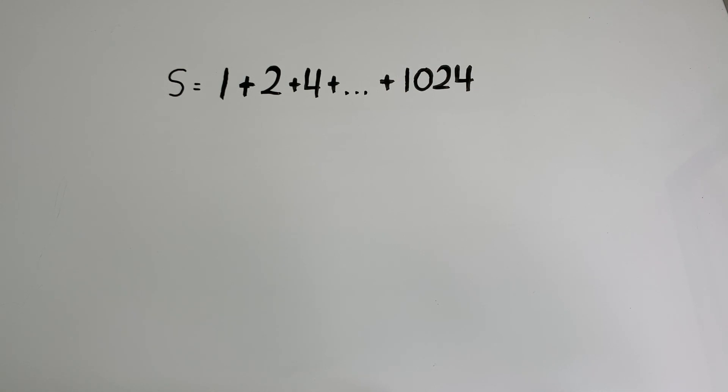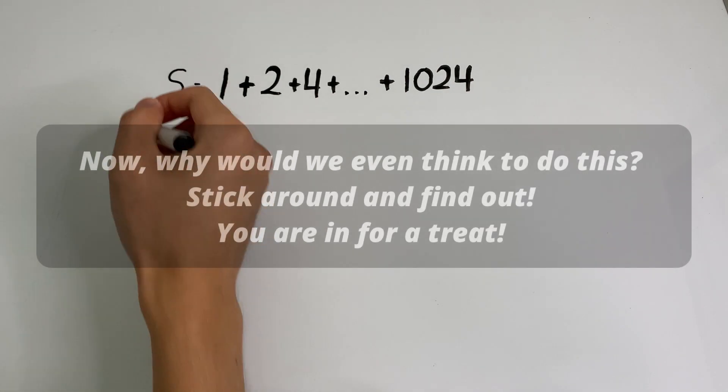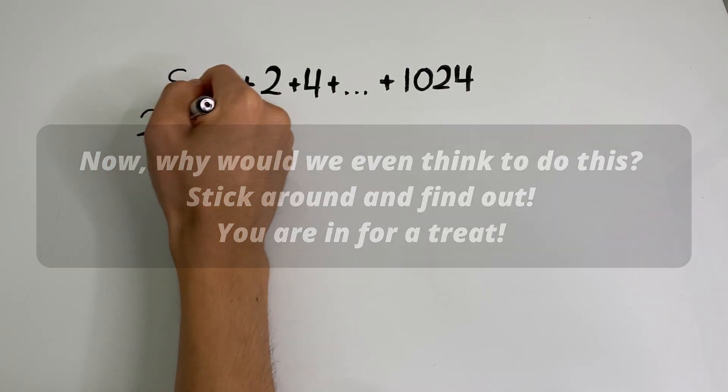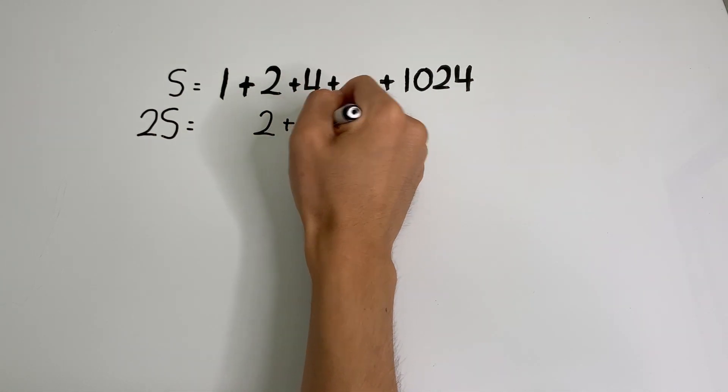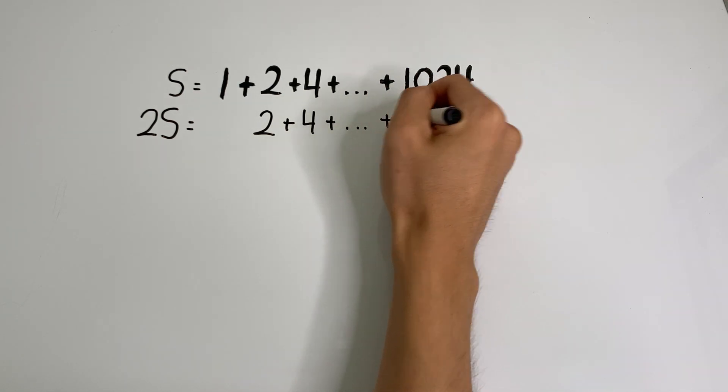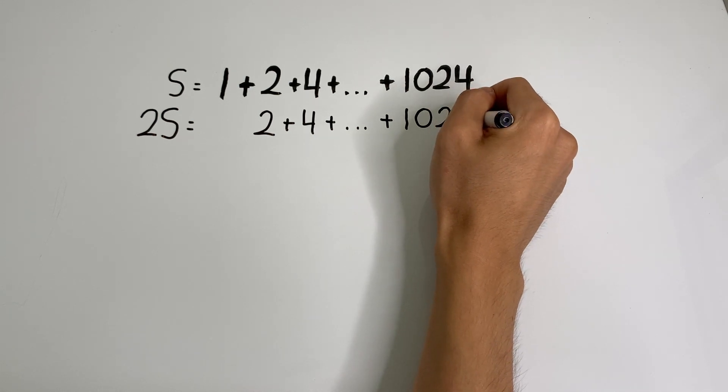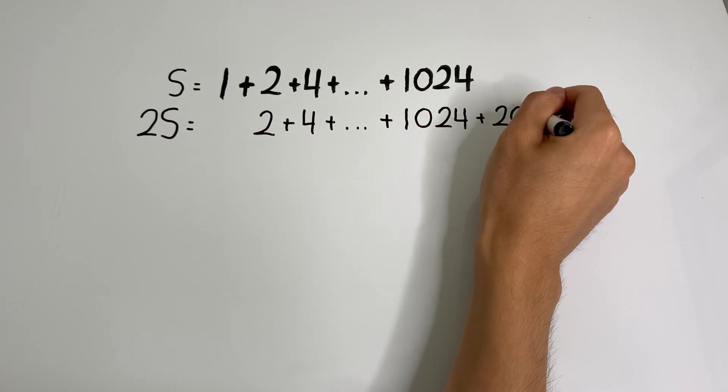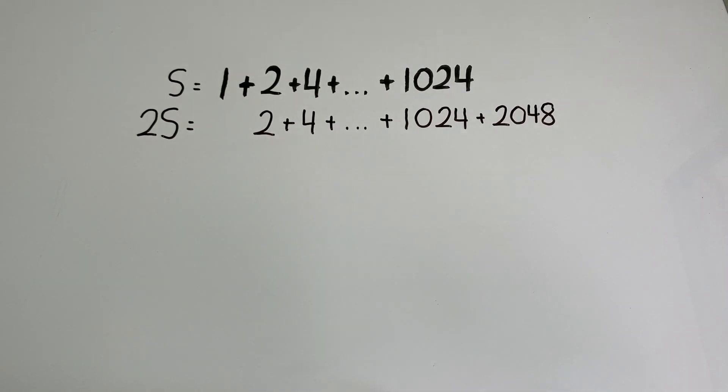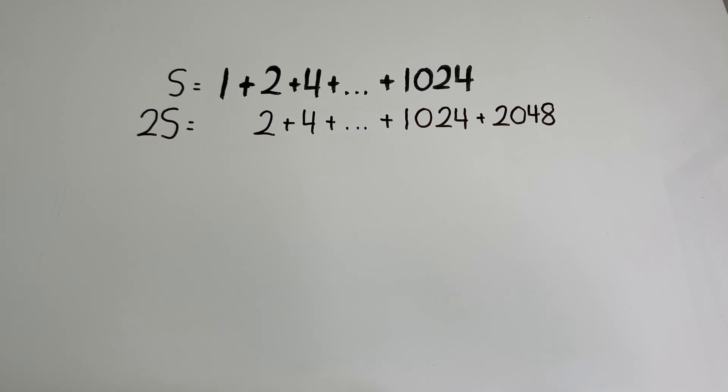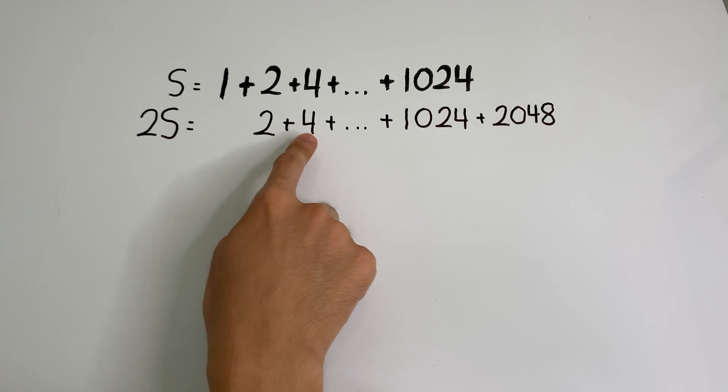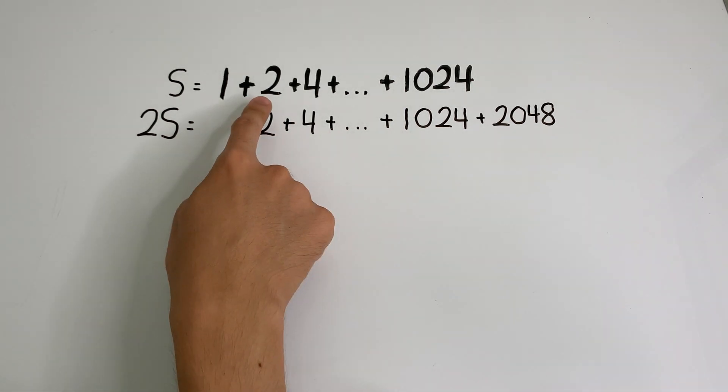Now let's take S and let's multiply it by 2 to get 2S. And when we do that, we're going to get another series that goes 2 plus 4 plus all the way to 1024. And you can see something really interesting is going on over here. When we took S and multiplied it by 2 to get a new series, we see that this new series actually has a bunch of common terms with S. 2, 4, all the way to 1024, well, that also appears in our original series S.